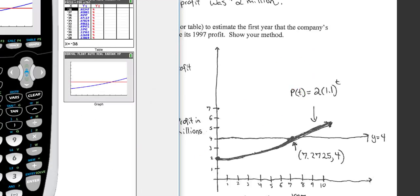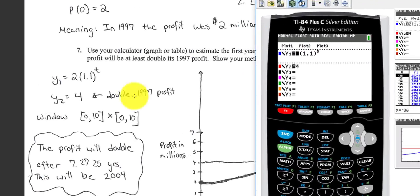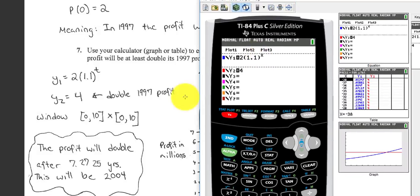Pull out your graphing calculator and put in 2 times 1.1 raised to the X for Y1. Y2 would be 4. So the initial profit was 2, double would be 4. The intersection would be our answer.